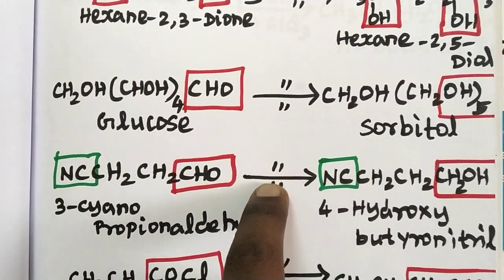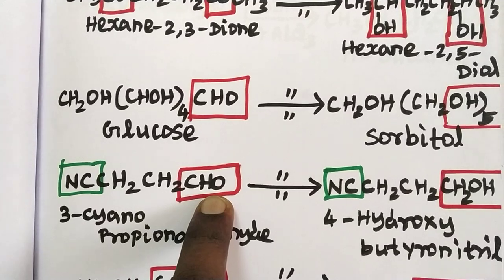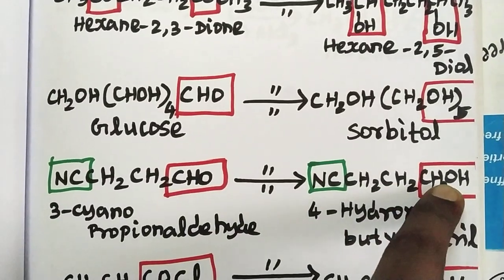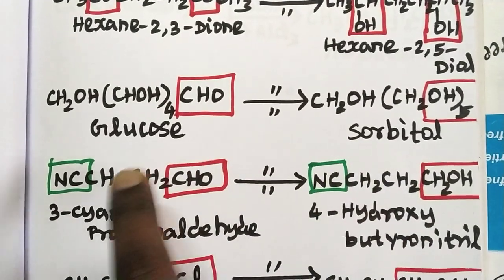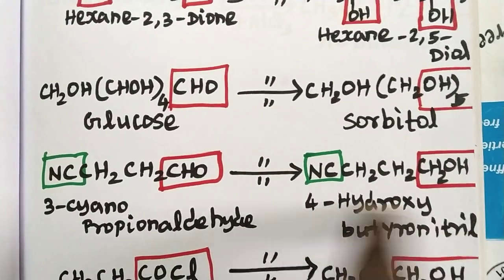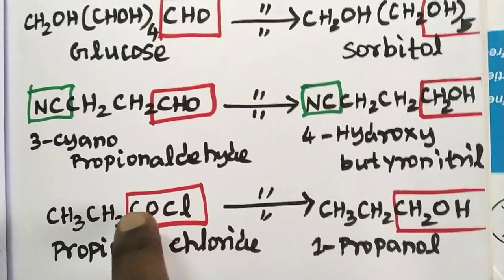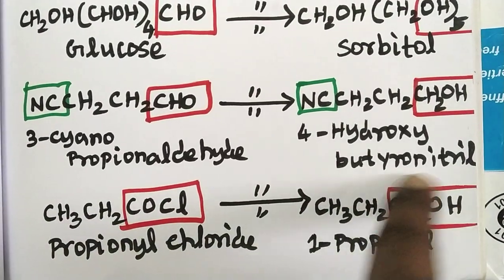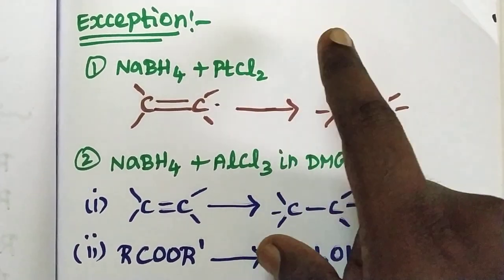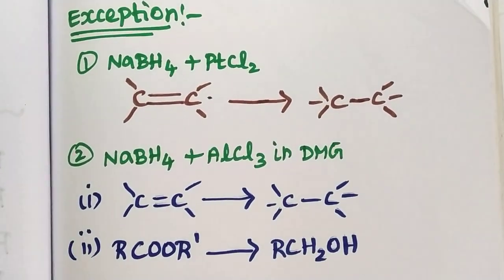Now, the reducing agents — the selective reducing agents. The non-selective reducing agents can reduce all groups. What are we doing? 4-hydroxybutyronitrile. Let's look at acid chloride. We have propionyl chloride — this is an acid chloride reduced to primary alcohol, 1-propanol.